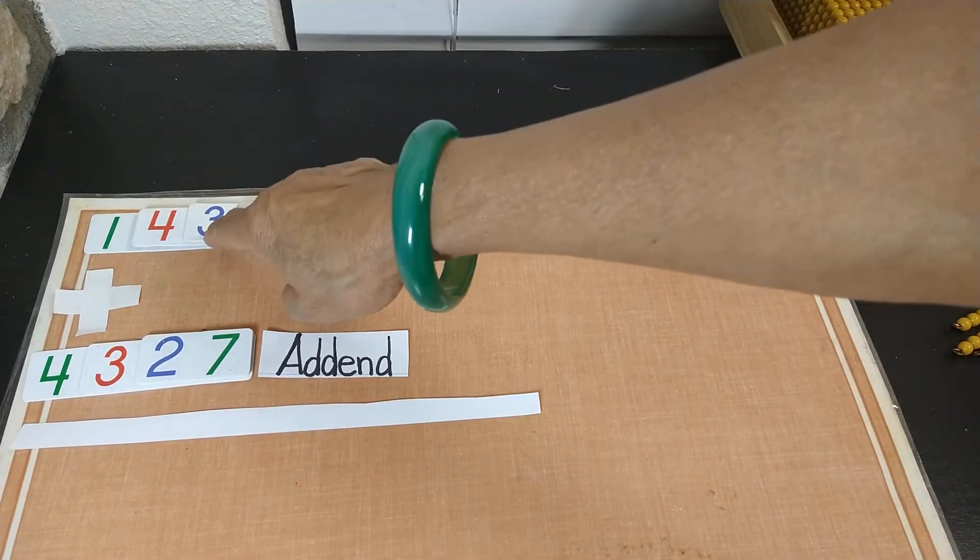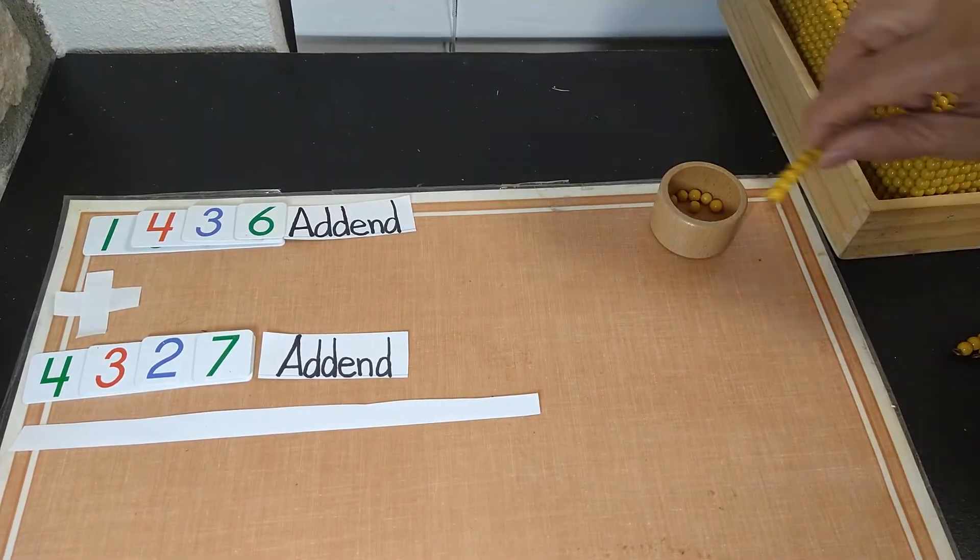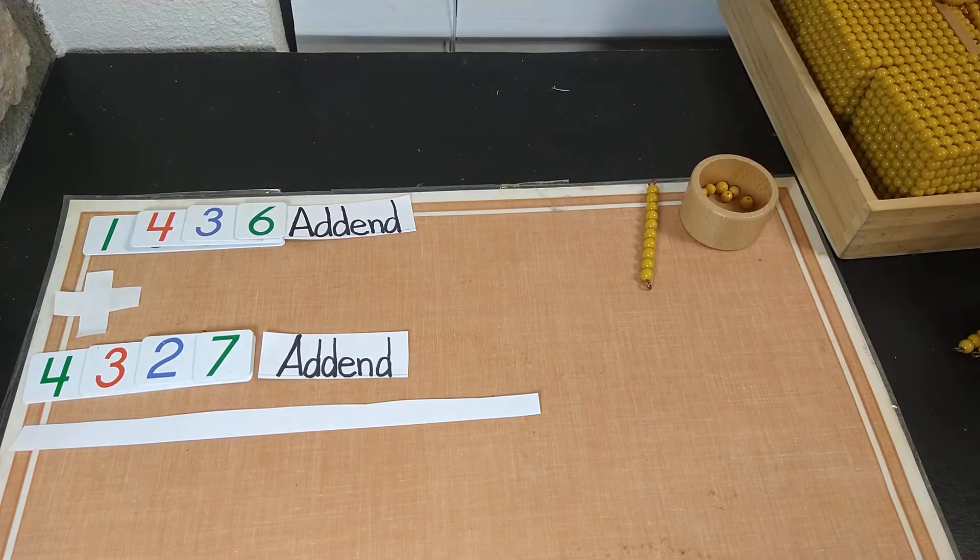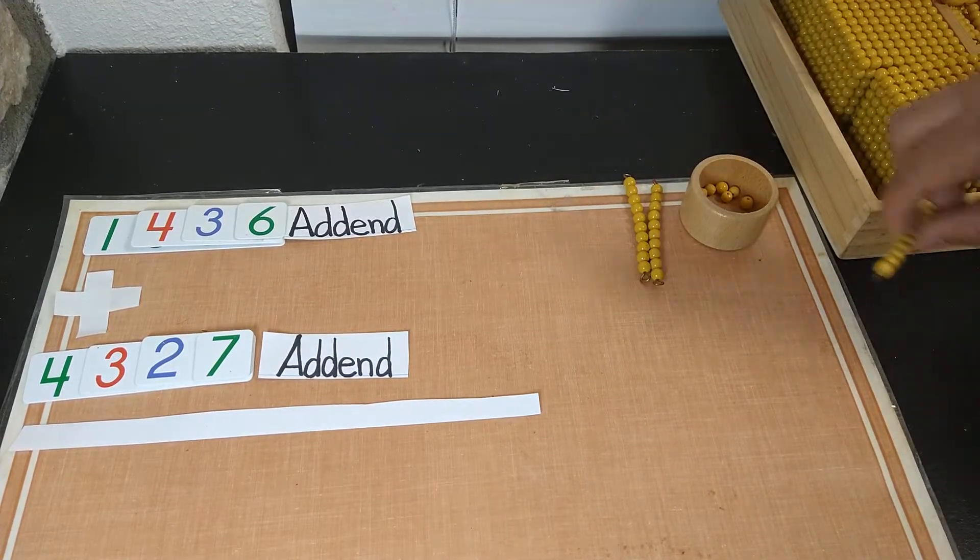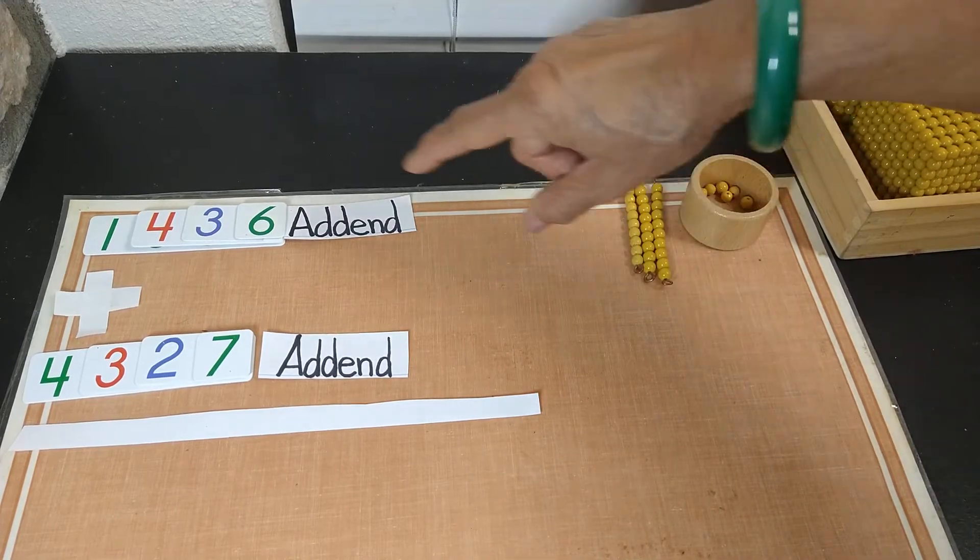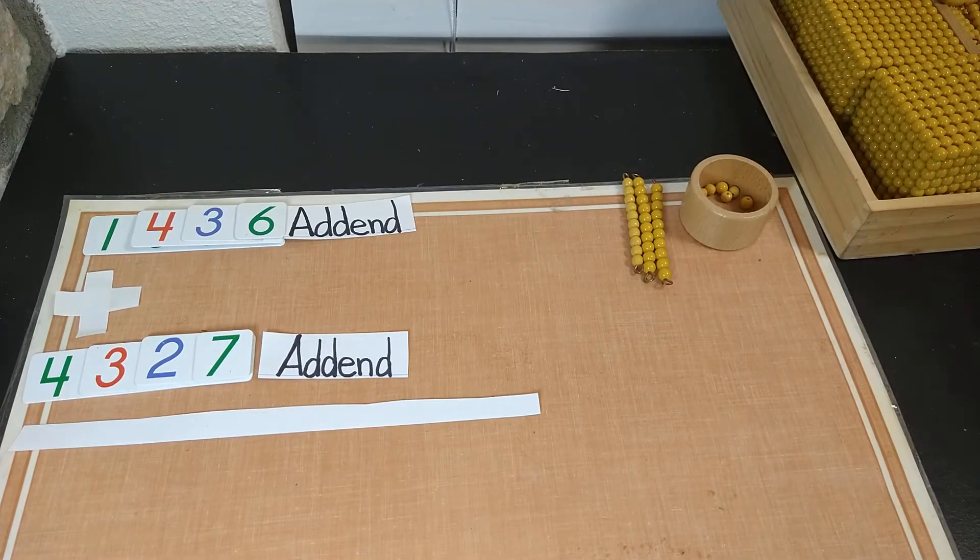How many tens do we have? 3 tens. 1,10. 2,10. And 3,10. How many hundreds? That's correct. 4 hundreds.